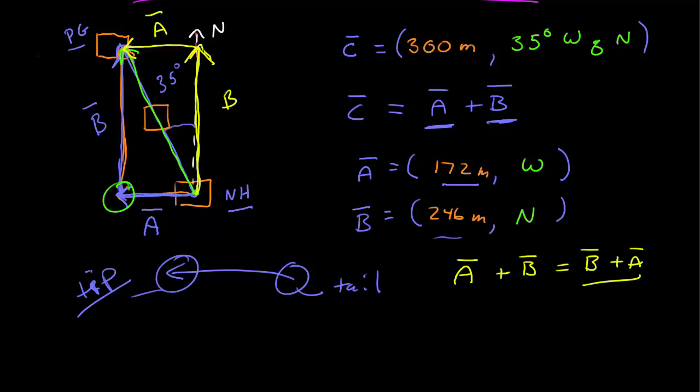Then take the second vector, translate but not rotate, so that its tail is at the tip of the first vector. Then go to the tail of the first vector, draw a line to the tip of the second vector, and that's the resulting vector, which in this case, the vector C again.